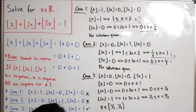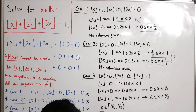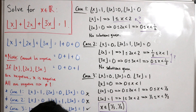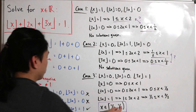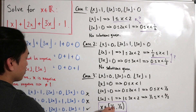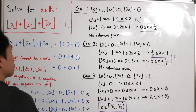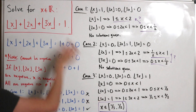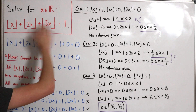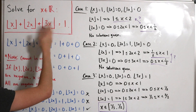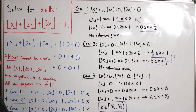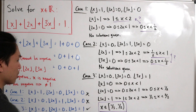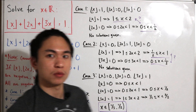We've found our solution: the interval [1/3, 1/2) satisfies the equation. You can verify this yourself — choose any number between 1/3 inclusive and 1/2 non-inclusive, plug it into the equation, and the floor of x plus floor of 2x plus floor of 3x will equal 1 no matter which x you choose in that interval.